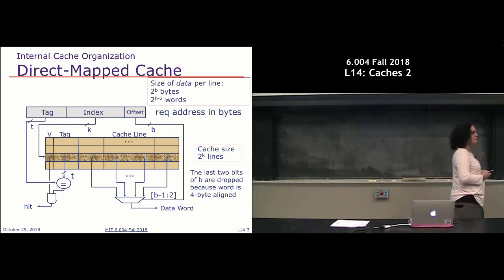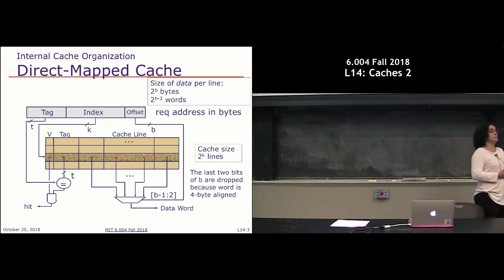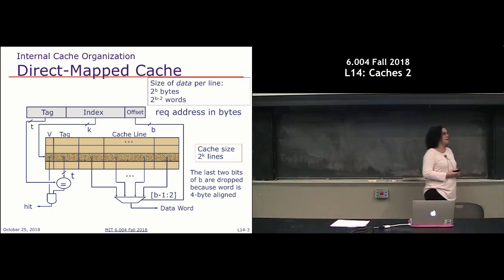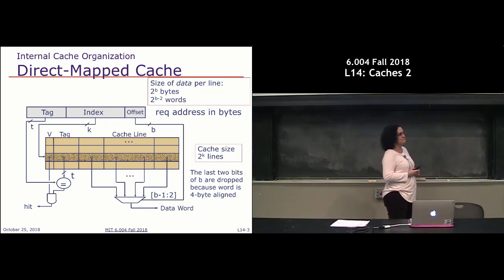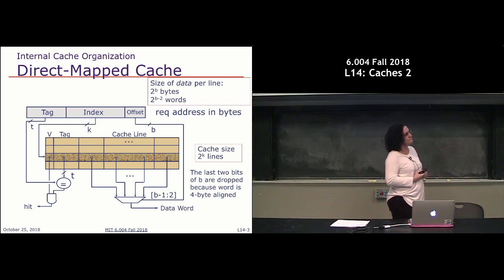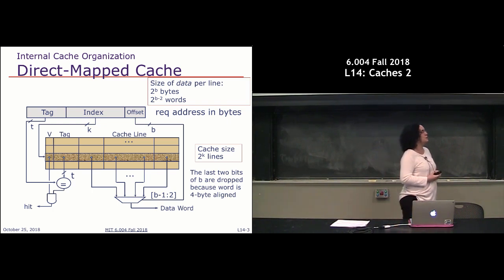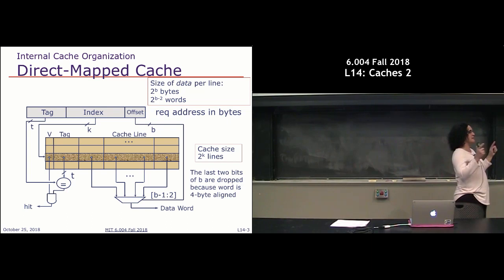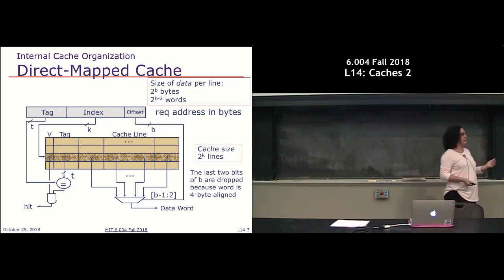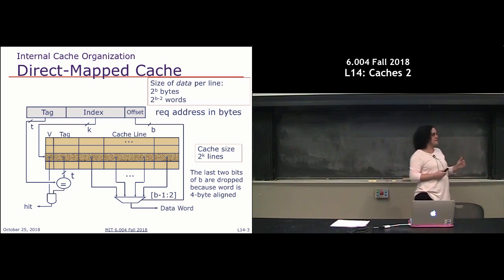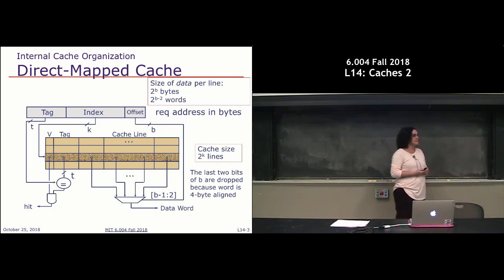There is one tag per cache line, not one tag per word. That's one of the benefits of having a block size larger than one — the proportion of your cache used for tag bits is much smaller. You assume the things in the same line are contiguous locations in memory, so you can figure out the exact address based on the offset bits.